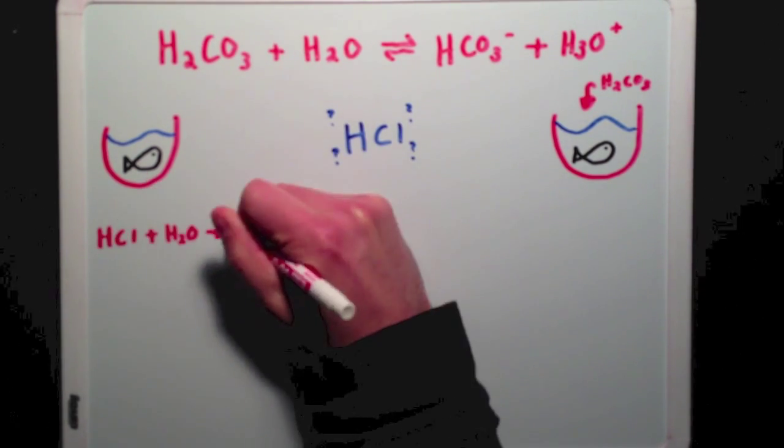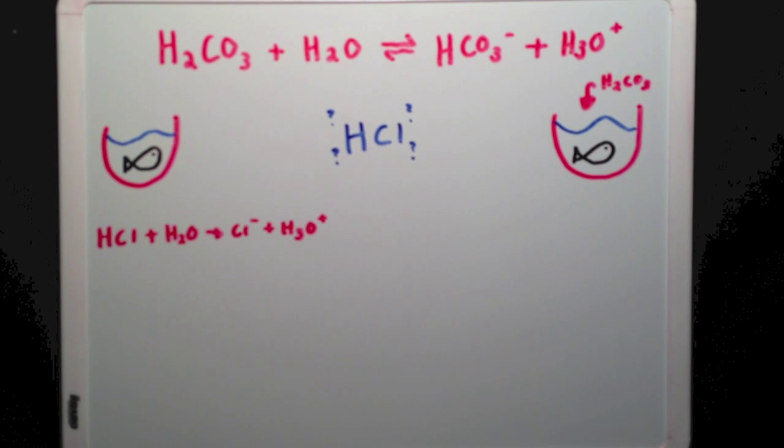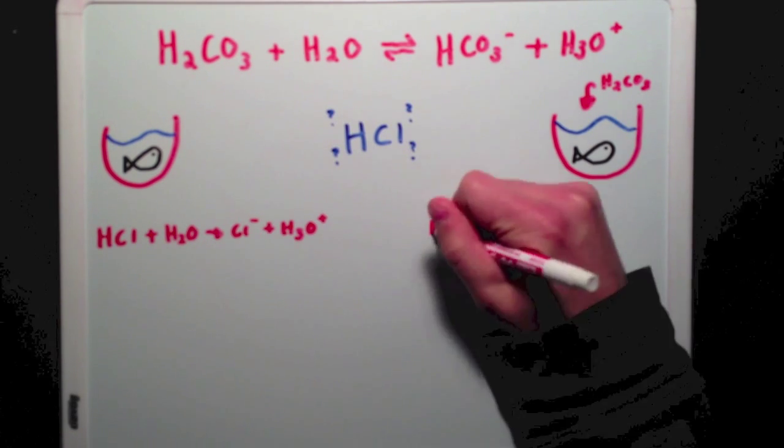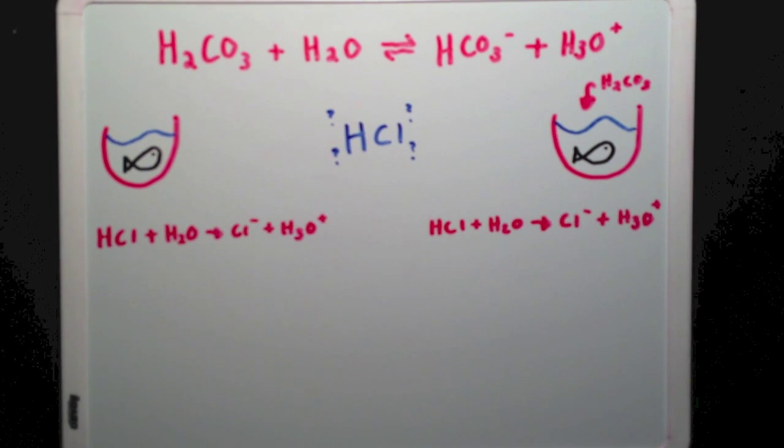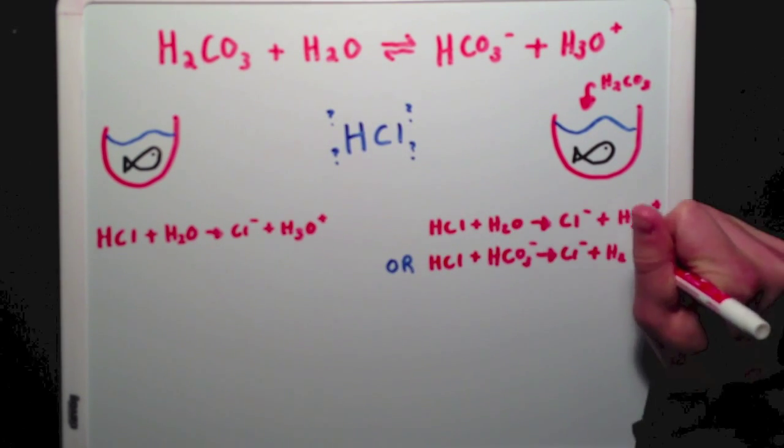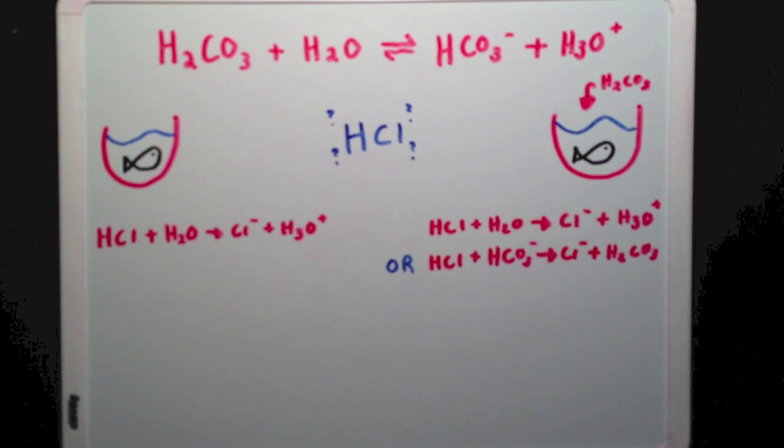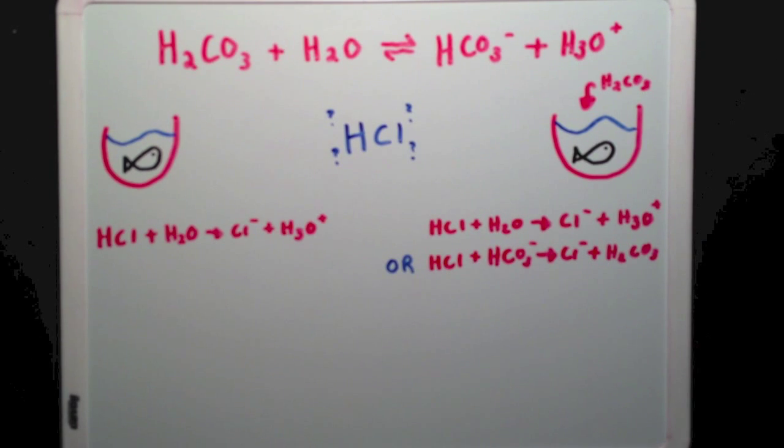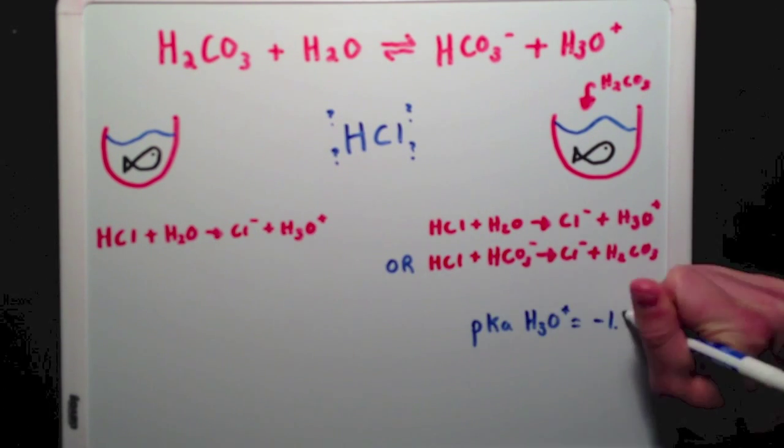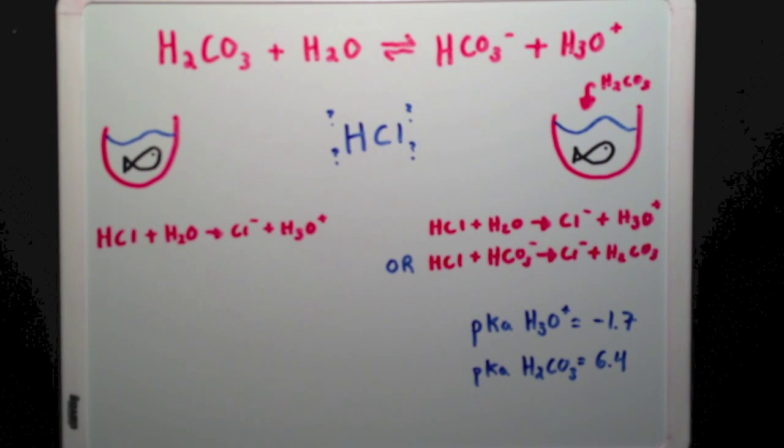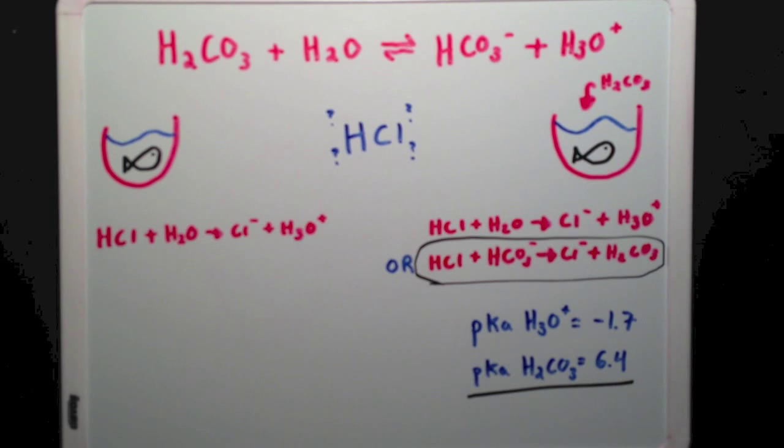Well, in the fishbowl without the buffer, the hydrochloric acid will react with the water to form chloride ions and hydronium ions. This same reaction can occur in the buffered bowl, or the hydrochloric acid can react with bicarbonate ions to form carbonic acid molecules. Since the pKa of hydronium is negative 1.7 and the pKa of carbonic acid is 6.4, it's much more likely that the hydrochloric acid will react with the buffering bicarbonate than with the water.